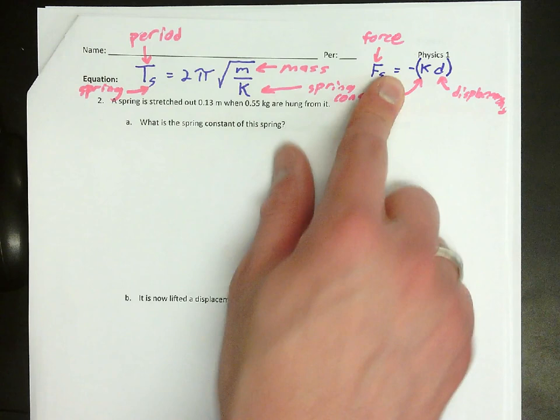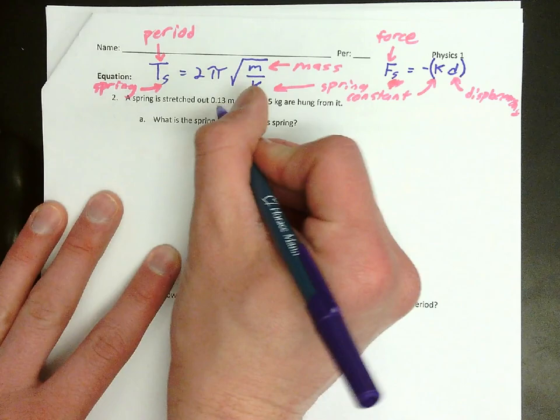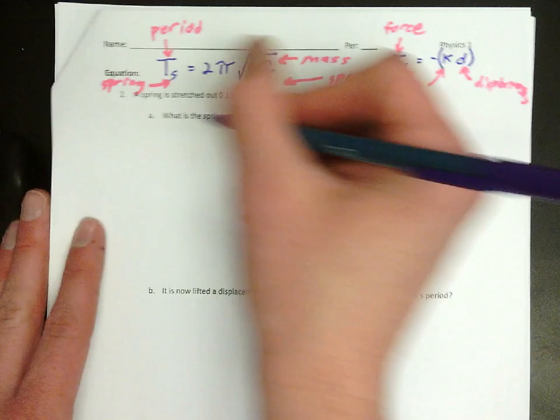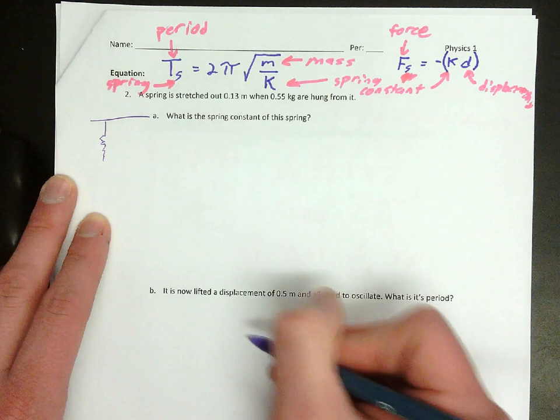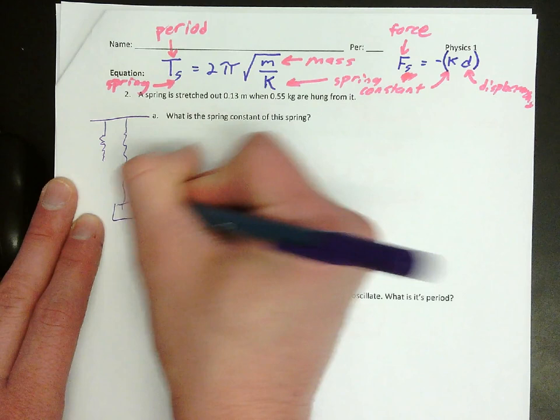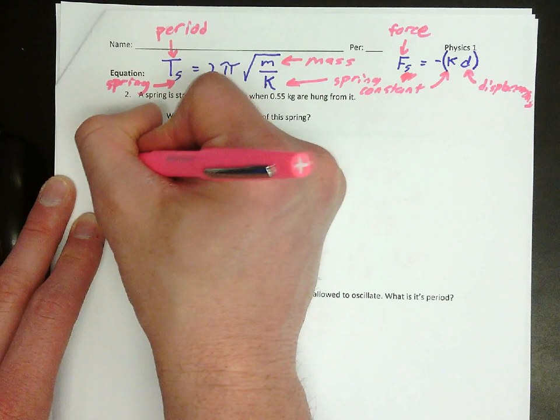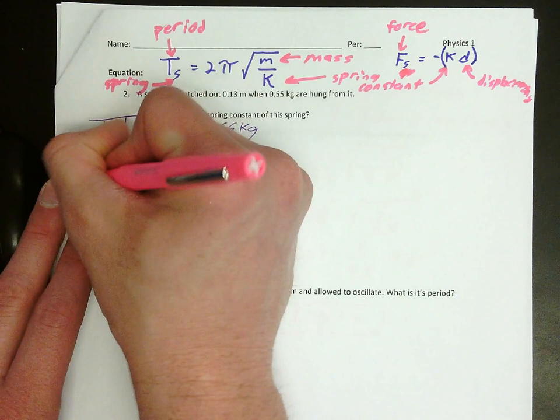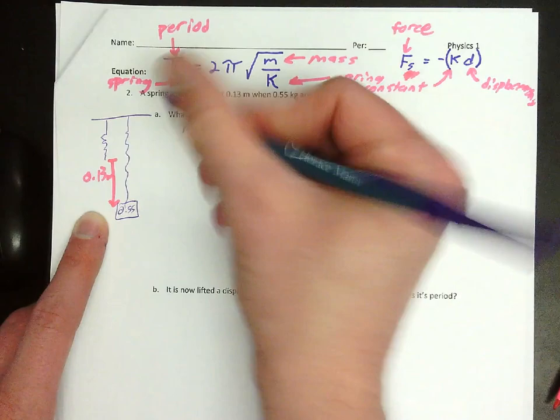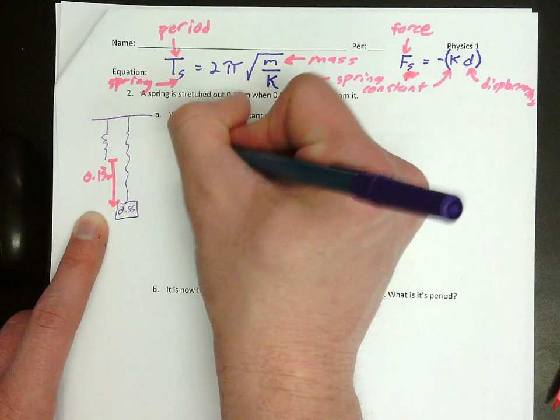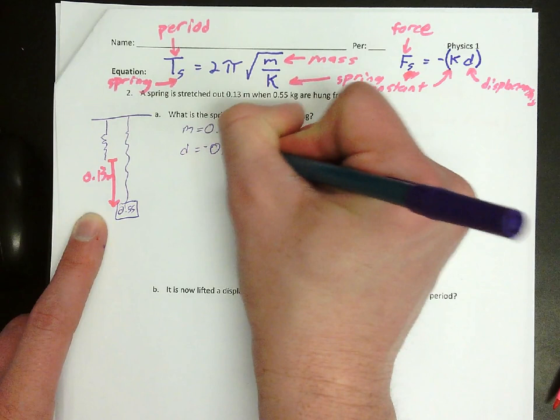And so let's look at what we have. We have that it's stretched out 0.13. So here's my spring. With nothing on it, it's like that. And then I put this weight on, and it stretches out. And that weight is 0.55 kilograms. So M equals 0.55 kg. And it stretches out from here to here, 0.13 meters. And that's the displacement. But because it's stretching down, I'm going to call it negative 0.13 meters.